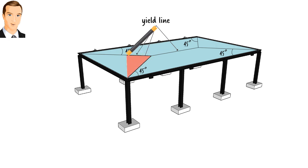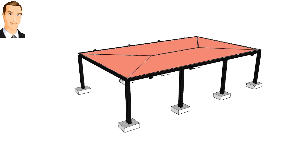So, we can consider each of these areas to be the tributary load area for its edge beam. This means the long beams on the side of the roof are going to be subjected to a trapezoidal load, and the short beams are going to be subjected to a triangular load.